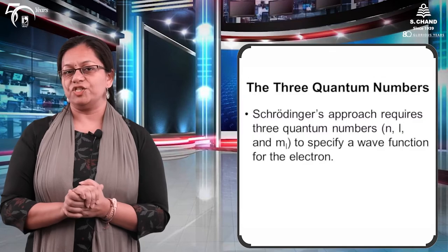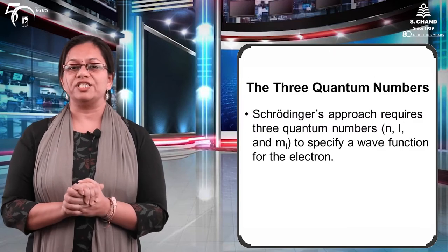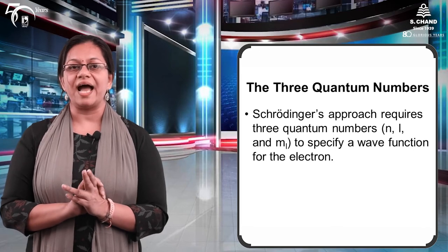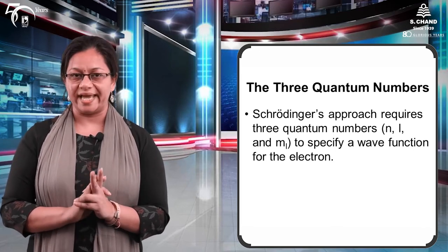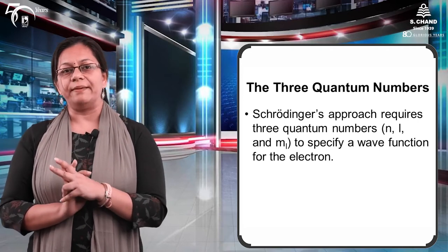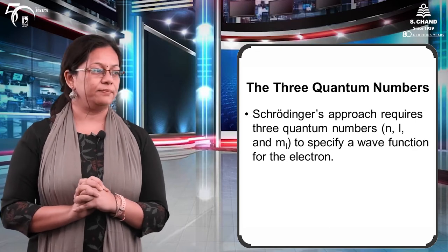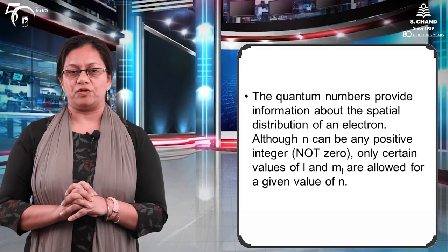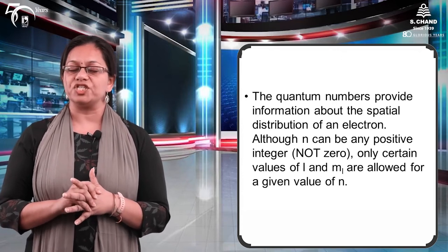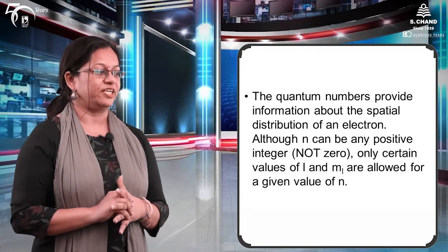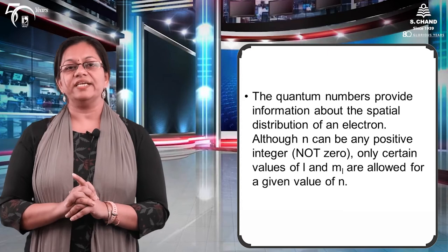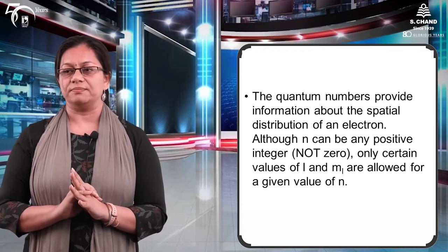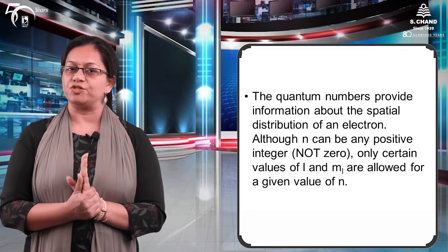Jab Schrödinger ki equation ko solve kiya, toh siraf teen quantum numbers chahiye the — principal (n), azimuthal (l), and magnetic (ml). The quantum numbers provide information about the spatial distribution of the electron. N will be only a positive integer — it cannot be 0, so n starts from 1.